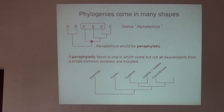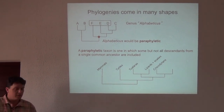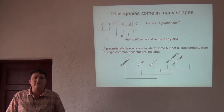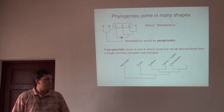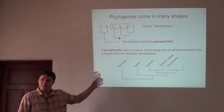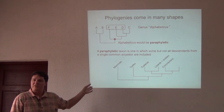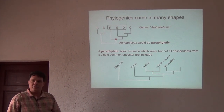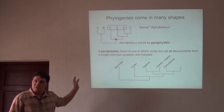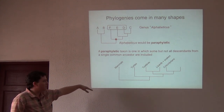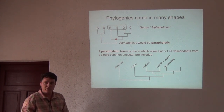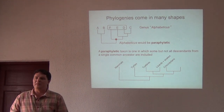Does this really happen in the real world? Here's a tree showing the evolutionary relationships between familiar groups — mammals, turtles, tuataras, lizards and snakes, and crocodilians. One taxon has been left out. If you recognized class Reptilia as this group tracking back to a certain point in the tree, what group has been left out?